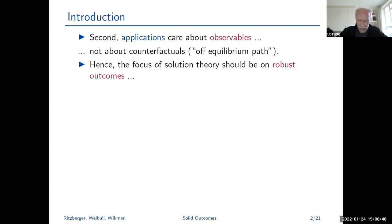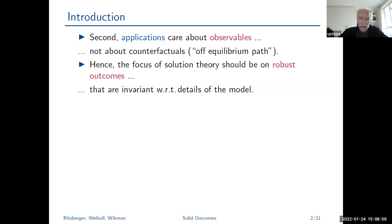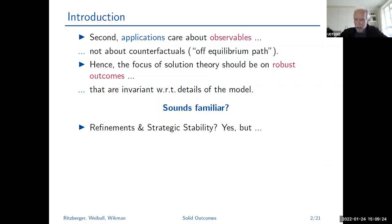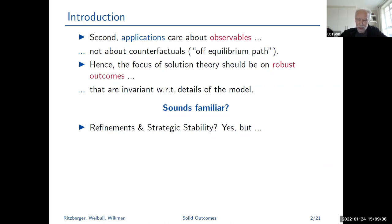When you want robust, observable outcomes that are invariant with respect to details of the model, that will ring a bell to many of you — at least the older ones. It sounds familiar: what comes to mind immediately is the refinements of Nash equilibrium debate in the 1980s and 90s, and of course strategic stability later on. These are also what we considered first, but all these things have drawbacks.